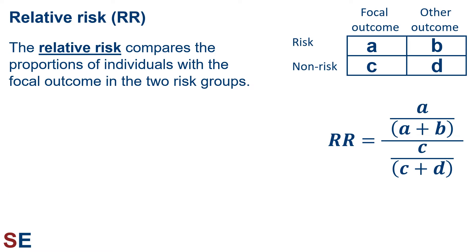Our first way to measure the relationship between risk and outcome is by using the relative risk, often abbreviated as RR. The relative risk compares the proportions of individuals with the focal outcome in the two risk groups. The numerator calculates the proportion of individuals in the risk group who have the focal outcome, and the denominator calculates the proportion of individuals in the non-risk group who have the focal outcome. If the risk increases the occurrence of the focal outcome, then the numerator will be larger and the relative risk value will be larger than 1. If the risk has nothing to do with the focal outcome, then the numerator and denominator will be similar and the relative risk value will be approximately equal to 1. And if what we're calling the risk reduces the occurrence of the focal outcome, then the numerator will be smaller and the relative risk value will be less than 1.